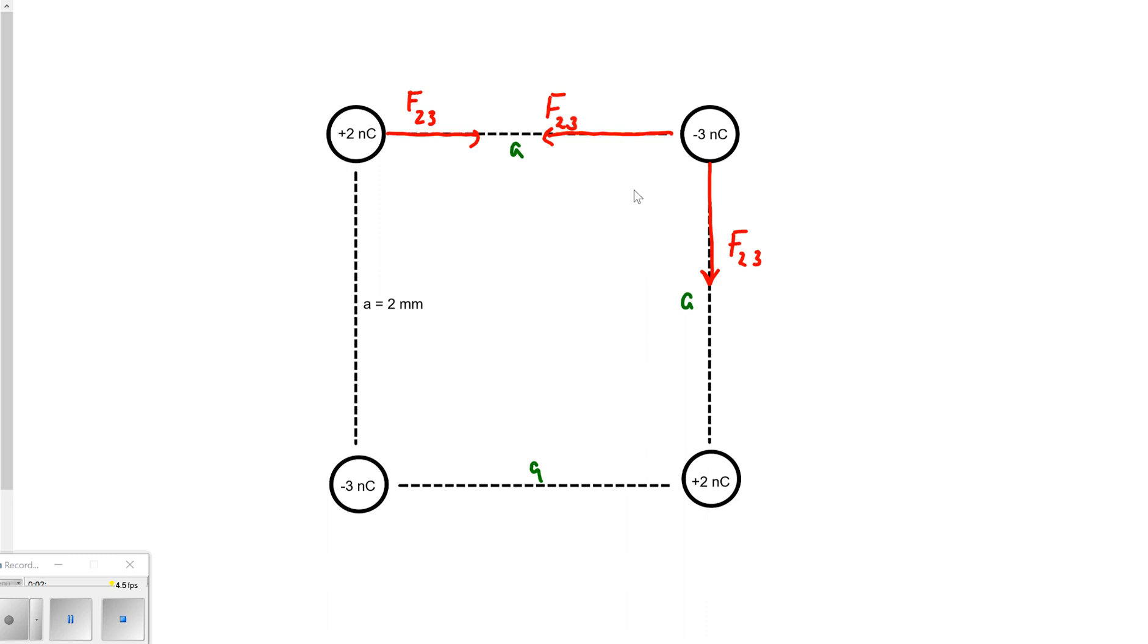Now, one thing, though, that we will have to kind of take note of in this one is this is a negative three and this is negative three. So what's going to be true about the force between these two? These two repel each other. So this particle up in the corner, we would have a force F3,3 on it. And there's a couple of things that are kind of neat here as we look at this.